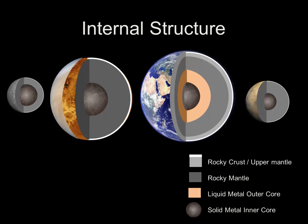Because the other planets don't show active tectonics, we believe that the mantle in those planets is rigid rock. Let's take a look at some of the surface features on the four terrestrial planets.